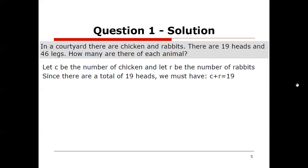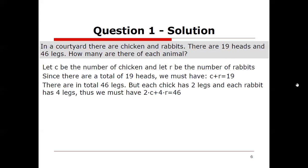There's also a total of 46 legs. What does that mean? Well each chicken has two legs and each rabbit has four legs. So we must have 2 times c, 2 times the number of chickens plus 4 times the number of rabbits, 4r, equals 46. We've created two linear equations in the two unknowns c and r.